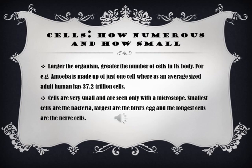Now let us see how numerous and how small cells are. Larger the organism, greater the number of cells in its body. For example, single-celled animals like amoeba and bacteria — these organisms are made up of just one single cell. So many small plants and animals are made up of just one single cell.